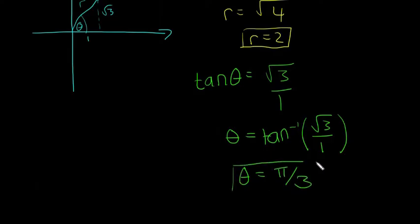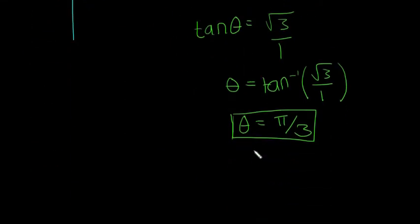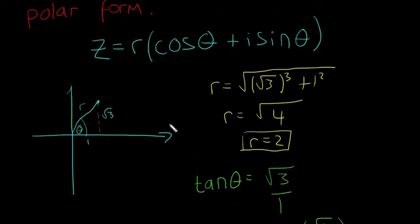So remember, it's always going to be in radians. The angle has to be in radians, it can't be in degrees for this polar form to make sense. So now we have r equals 2 and theta equals pi over 3, so we can write our complex number in the polar form.